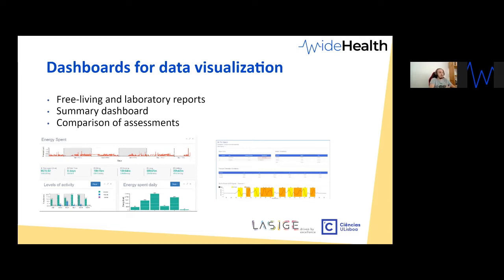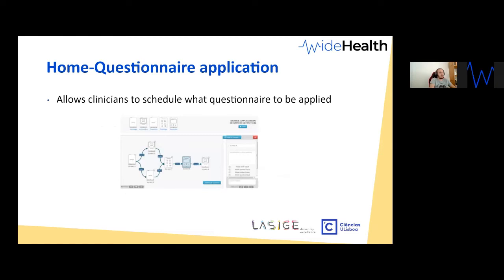In the free-living report, clinicians can choose what kind of information they want and what time period to view — by day or by week — depending on the specific metric. There is also a summary dashboard with all patient information and visualizations, including comparison of different assessments and questionnaires filled at different evaluation periods. This is another example of how we collect data in an uncontrolled environment.